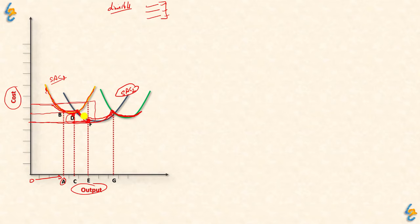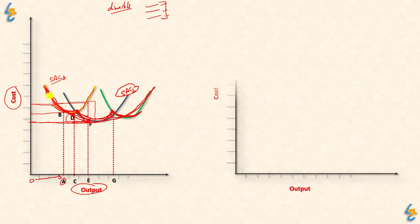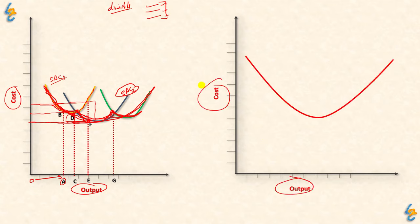From these three short run average cost curves, when we take the envelope of the minimum average costs, the long run average cost gives a scallop shape. If we draw a smooth curve through these points, we get the long run average cost curve — a smooth envelope curve.